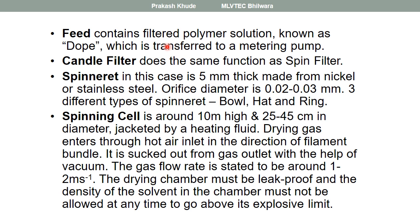Different types of spinnerets include bowl type, hat type, and hearing type. The spinning cell is generally around 10 meters high and 25 to 45 centimeters in diameter. It is jacketed with a heating fluid. Drying gas is introduced through a hot air inlet in the direction of the filament for evaporation of the solvent. The gas exits through a gas outlet with the help of vacuum, and the gas flow rate is around 1 to 2 meters per second.